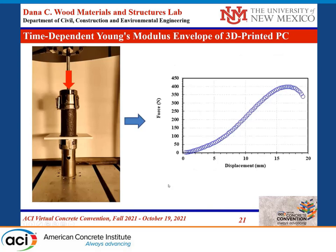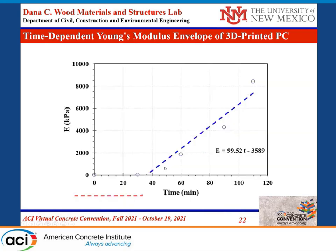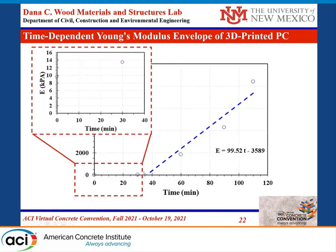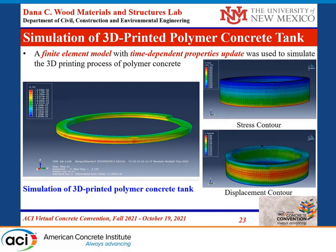We also determined the evolution of Young's modulus with time by testing fresh concrete to determine the modulus of elasticity at different time steps. You can see the failure of the material as load increases at each specific time. We develop the change in elastic modulus with time — there is a very small change early, in the kilopascal range, but there is a bilinear change in the modulus of elasticity. We feed this information to our finite element model, which allows us to model the printing process and the stress evolution during printing of this large circular structure, obtaining displacement contours and stress contours.